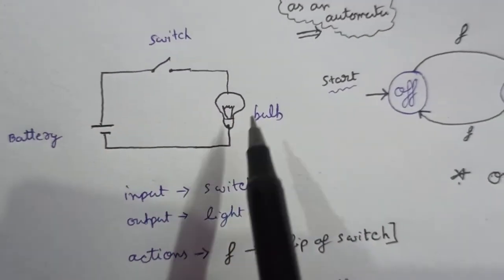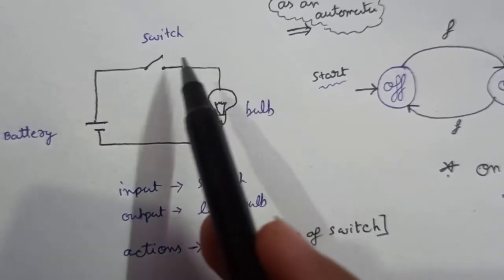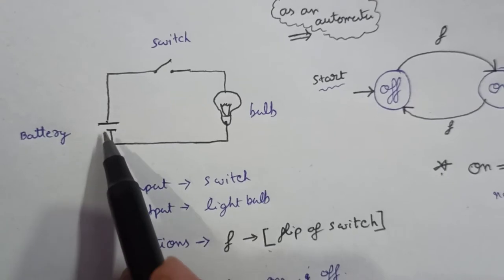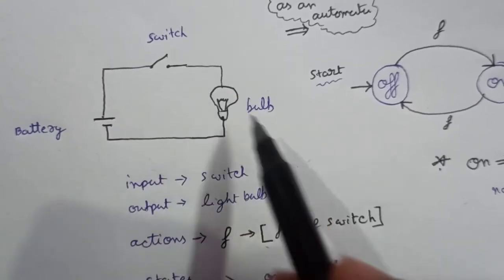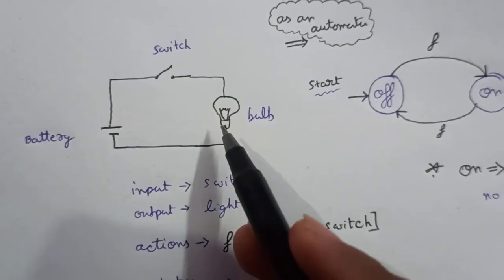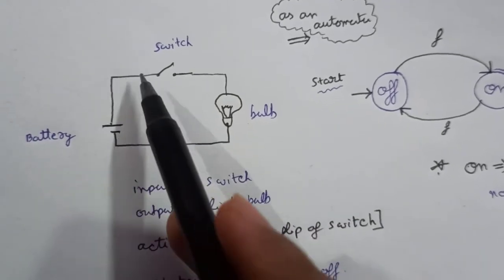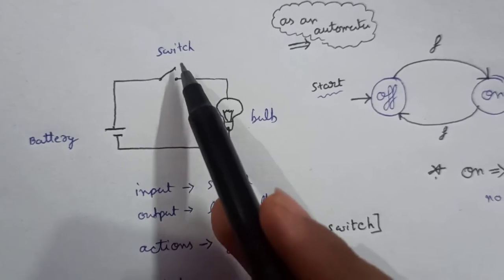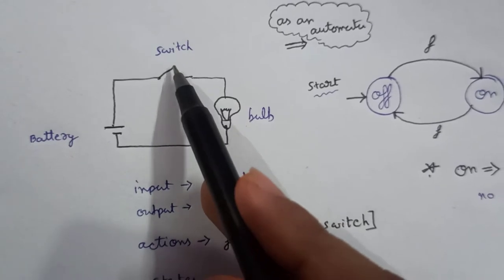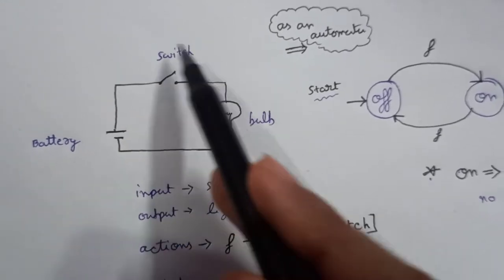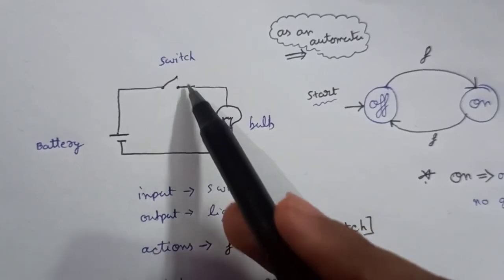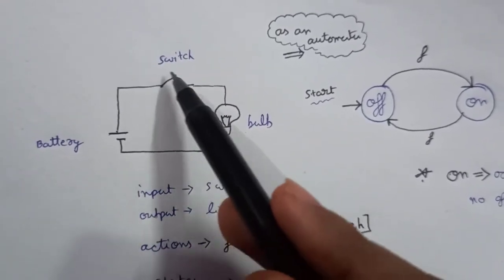Here we can see a basic simple circuit — we have seen such circuits in physics or electronics. There is a battery, a switch, and a light bulb. One end of the battery is connected to the bulb, the other end is connected to a switch, and the other end of the switch is connected to the bulb. In the starting point, the switch is off.